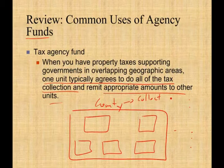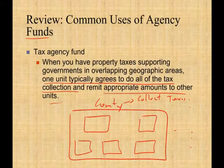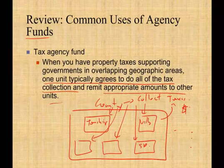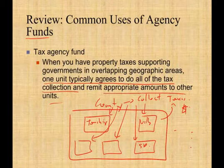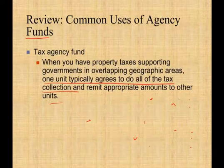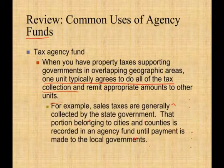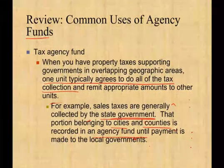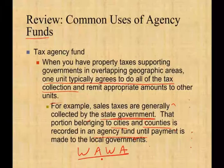The county collects all the taxes — one division collects from everyone for all sorts of taxes — for the township, the village, the school district. After they collect, they distribute the taxes back to the various governmental units, because the county has overlapping geographical control over all the other units. Also, sales taxes are generally collected by the state government, and that portion belonging to the cities and counties is recorded as an agency fund until the payment is made to the local government. That's exactly what I showed with the Wawa example.